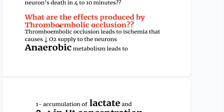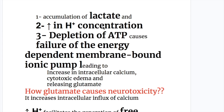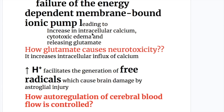Thromboembolic occlusion leads to ischemia that causes decreased oxygen supply to the neurons. Anaerobic metabolism leads to: (1) accumulation of lactate, (2) increase in hydrogen ion concentration, and (3) depletion of ATP, causing failure of energy-dependent membrane-bound ionic pumps, leading to increased intracellular calcium, cytotoxic edema, and release of glutamate.